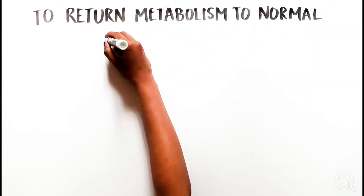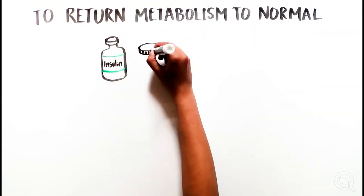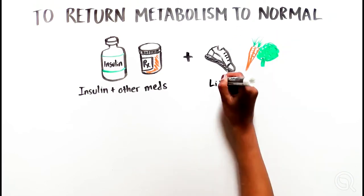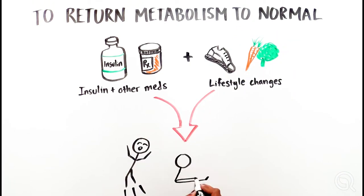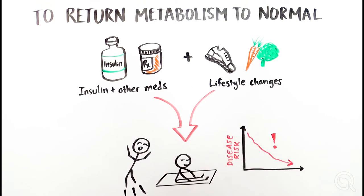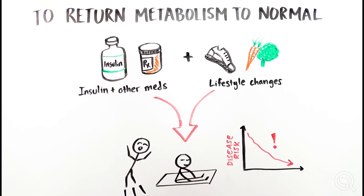Various medicines or changes to lifestyle can be used to return the metabolism to normal. Lifestyle changes can be powerful, such as improvements in diet or more exercise, as they not only improve disease symptoms, but also lower the risk for many other diseases.